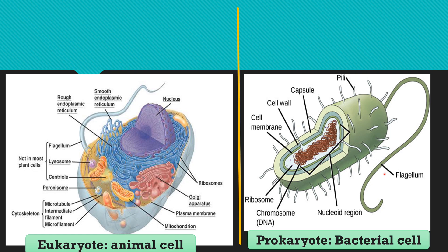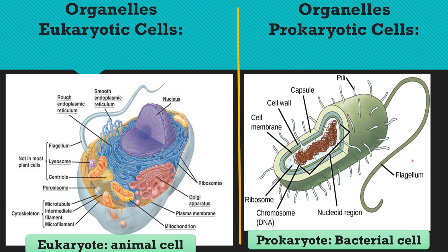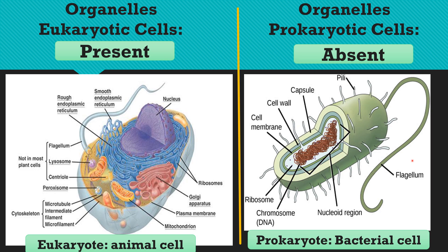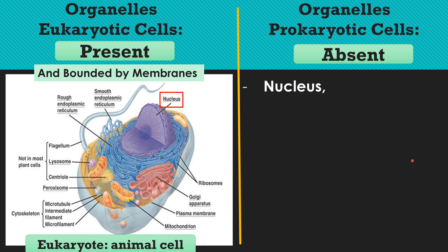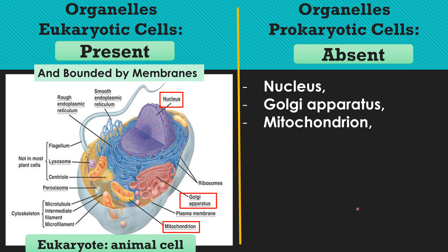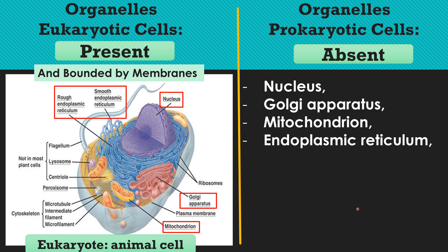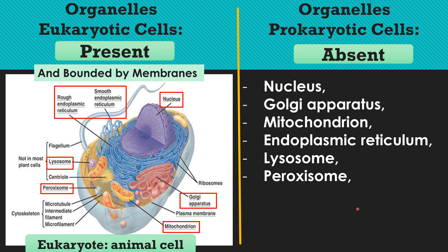Now for the differences: some organelles are present in eukaryotic cells but absent from prokaryotic cells. These organelles are membrane-bounded. They include the nucleus, which is present in eukaryotic cells but not in prokaryotic cells, and the Golgi apparatus, which is also found in eukaryotic cells but not in prokaryotic cells.